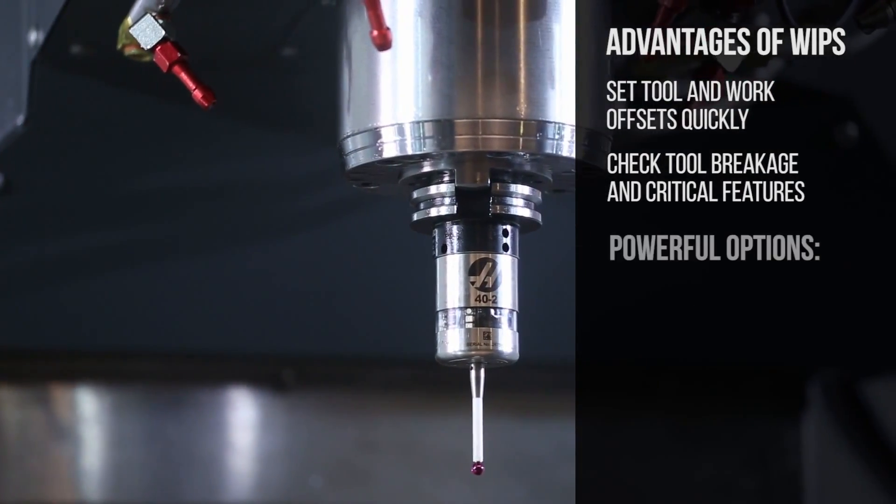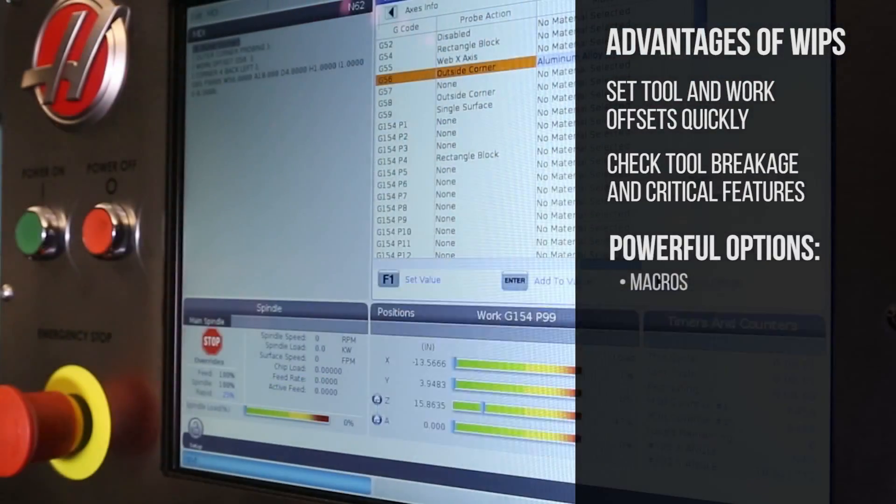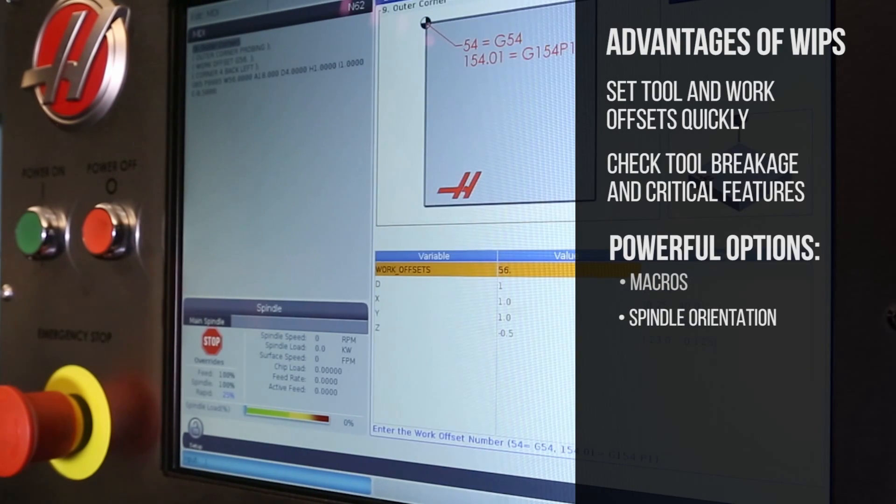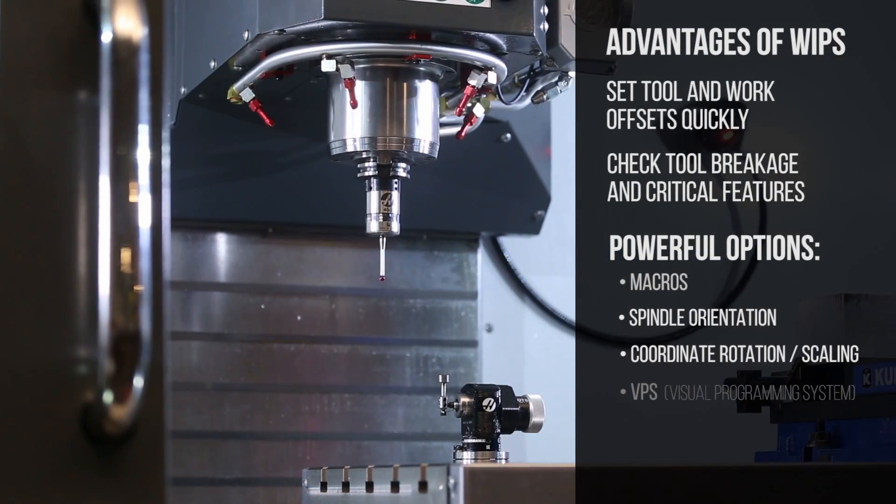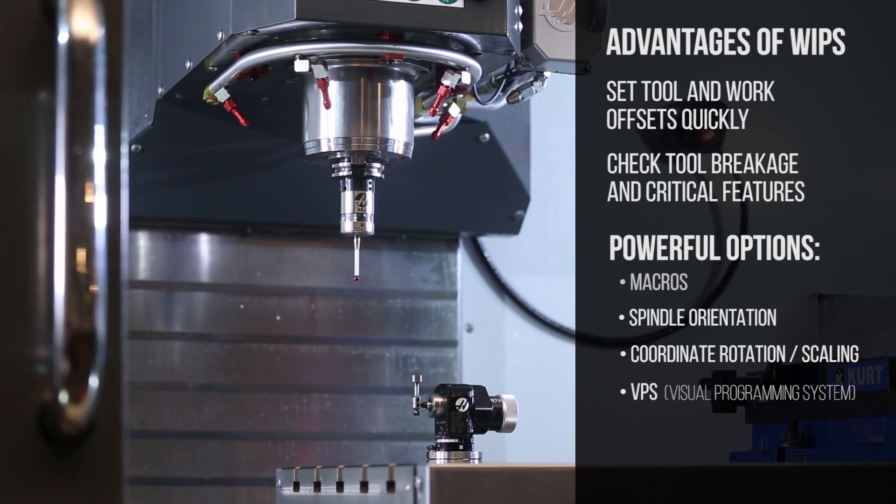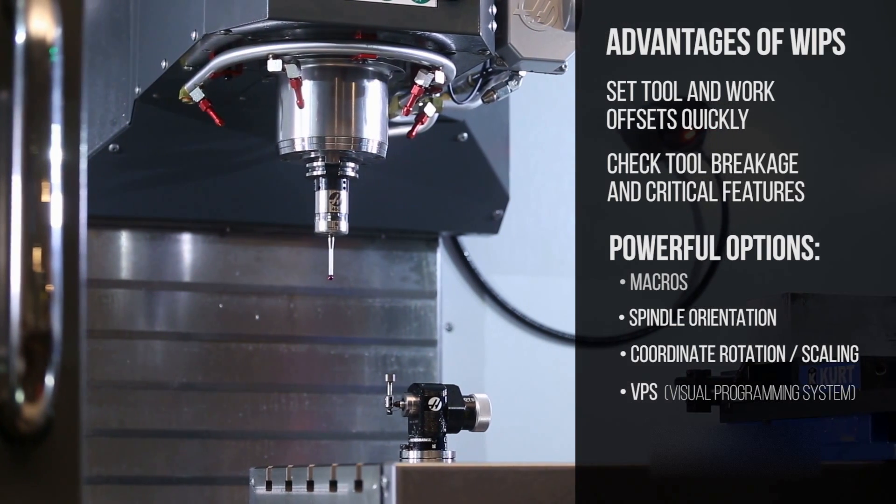And, WIPS comes with four powerful options. Macros, spindle orientation, coordinate rotation and scaling, and VPS. Haas' visual programming system, all included.